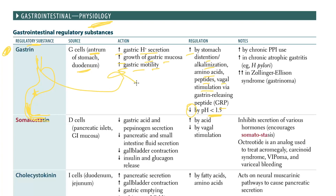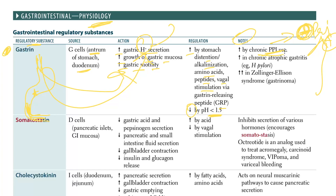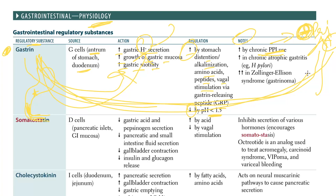Gastrin is increased in chronic PPI use. What is the PPI going to do? PPIs inhibit your parietal cells. When you inhibit your parietal cells, gastrin wants to increase HCl through the action of the parietal cell, so it keeps stimulating the parietal cell - but you've inhibited it with PPI. So the G cells keep growing and growing, causing gastrin levels to increase in chronic PPI use.